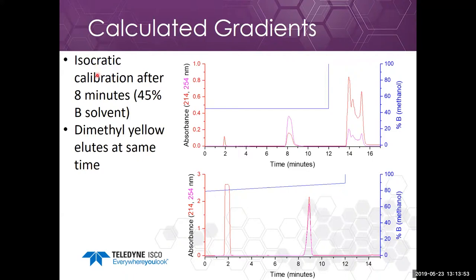You can do an isocratic calibration and if you want the retention time to be a little bit later at eight minutes, that's 45% B. Using the same analytical run as before, we take dimethyl yellow in acetonitrile and it elutes at the desired retention time. What this shows is that the extra delay — the mixing volume correction factor, or delta — is nothing more than the time it takes for the compound to elute on the prep system. So we've eliminated all of those mystery correction factors; none of them appear in the time on target algorithm.